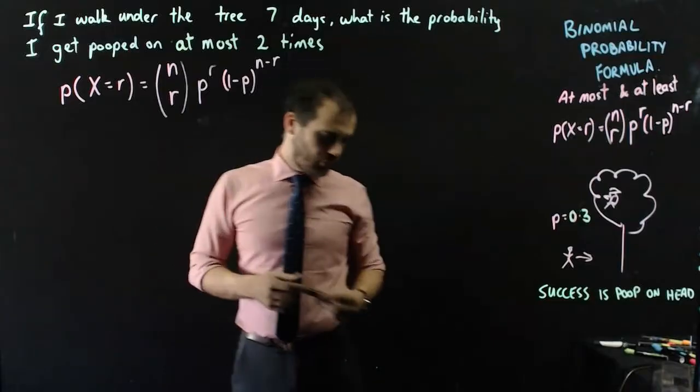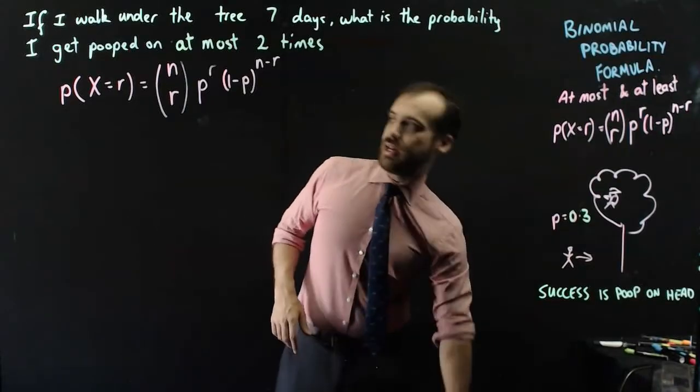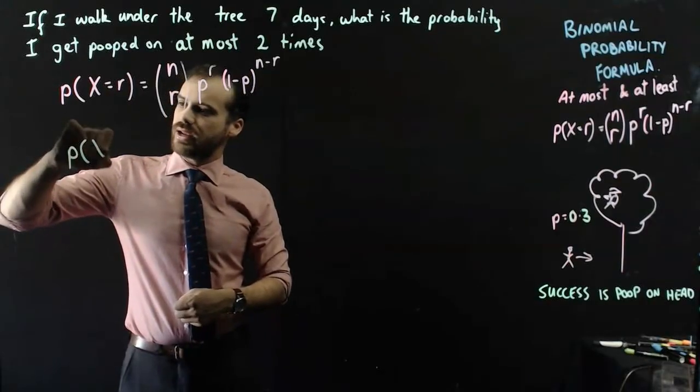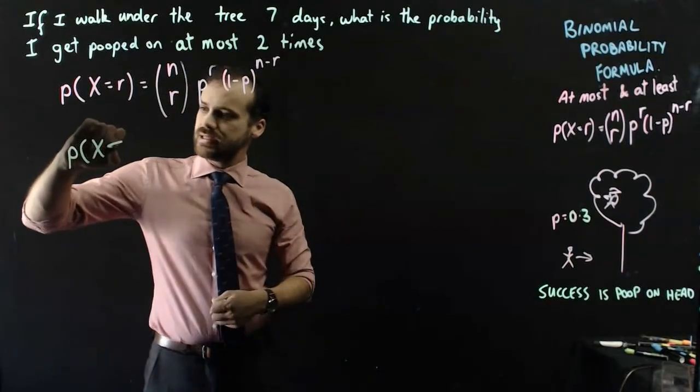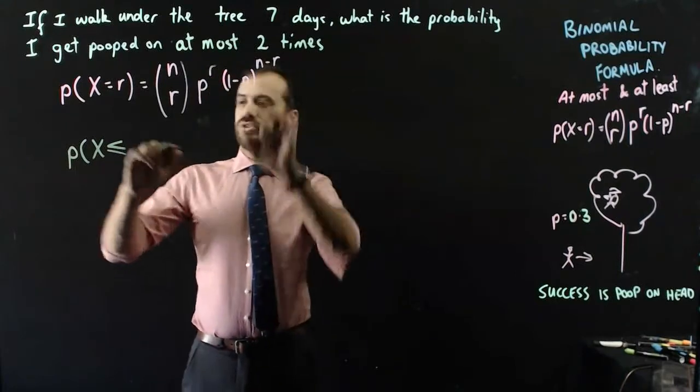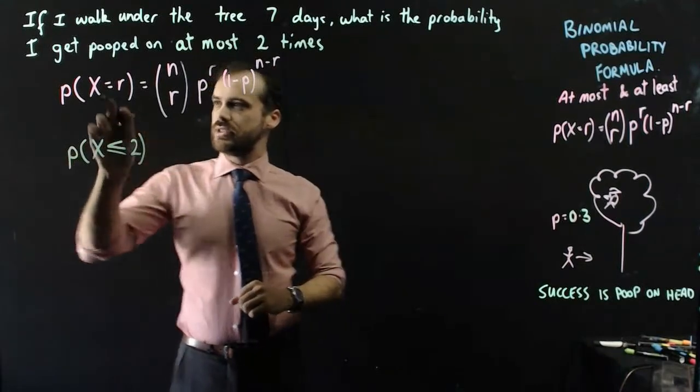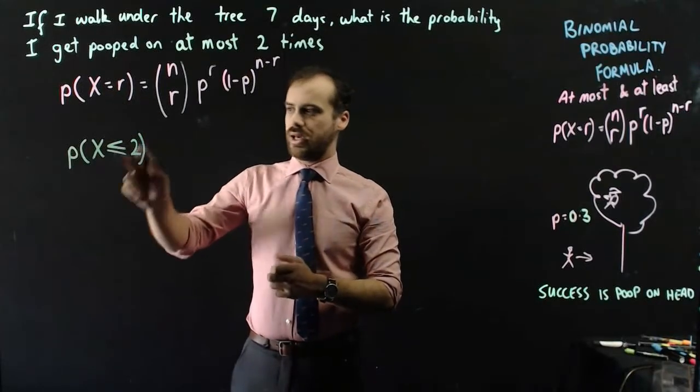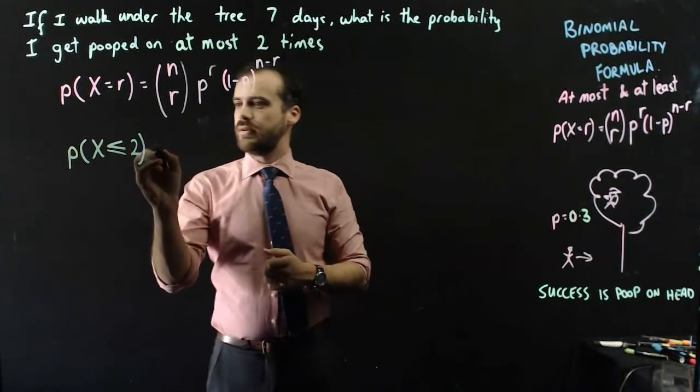So let's look at what our formula looks like. We say that the probability that x is less than or equal to 2. This is the first time we've created our formula where we didn't have an equal sign. We had a less than or equal sign.